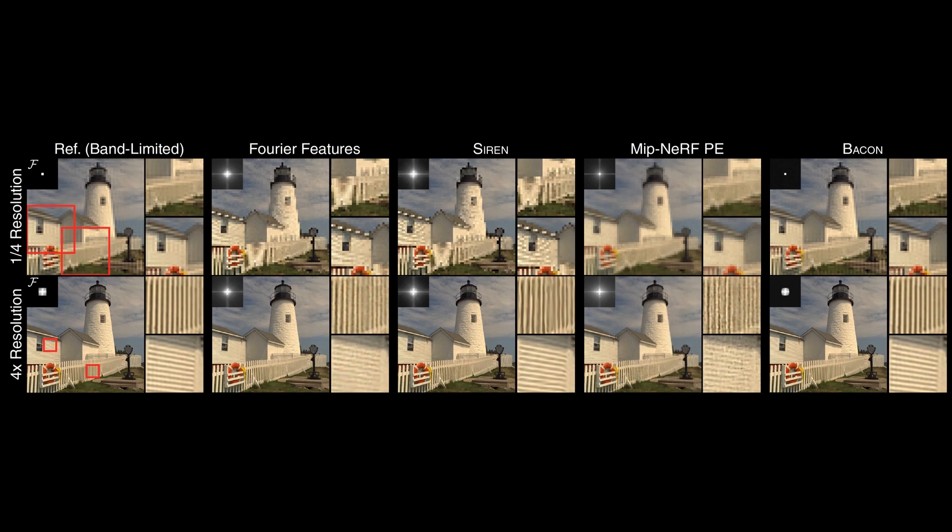All methods except for BACON have artifacts if we finely sample the network outputs at four times the trained resolution. BACON automatically performs a band-limited interpolation, equivalent to zero padding in the Fourier domain, and produces a predictable output at these unsupervised input coordinates.